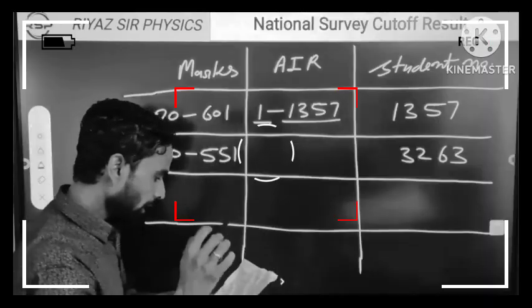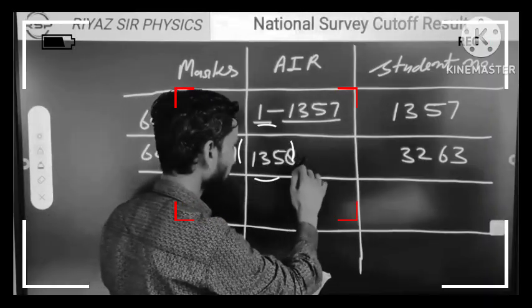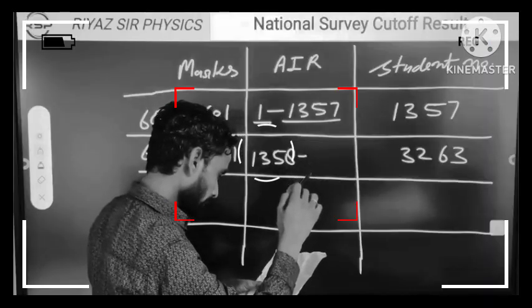If we see your rank here, it will be between 600 to 651 marks from 1358 to 4620. This is how your rank will be made here.